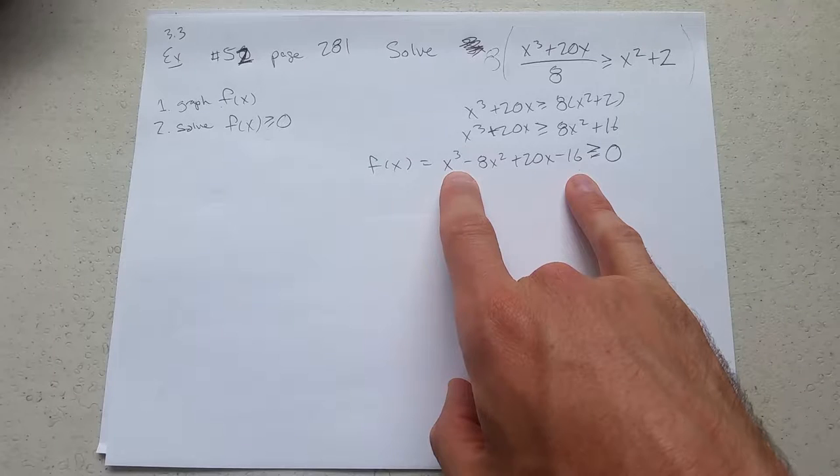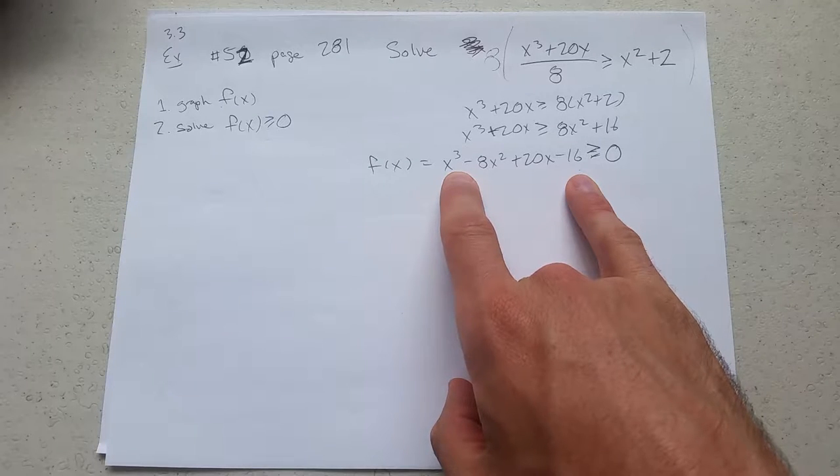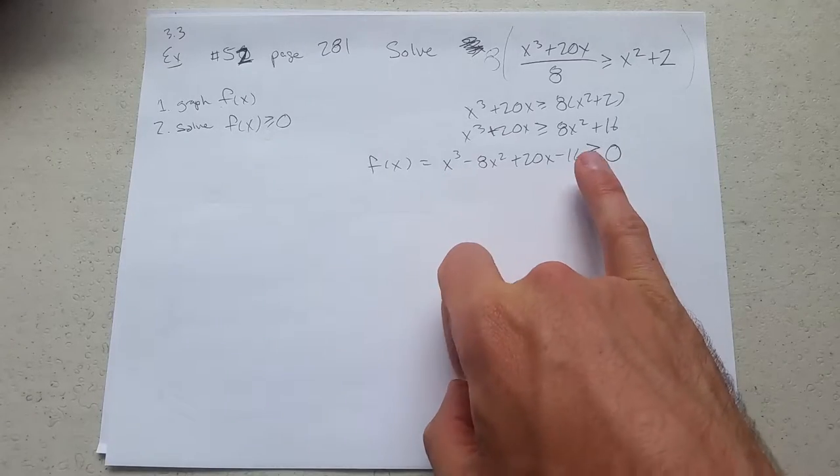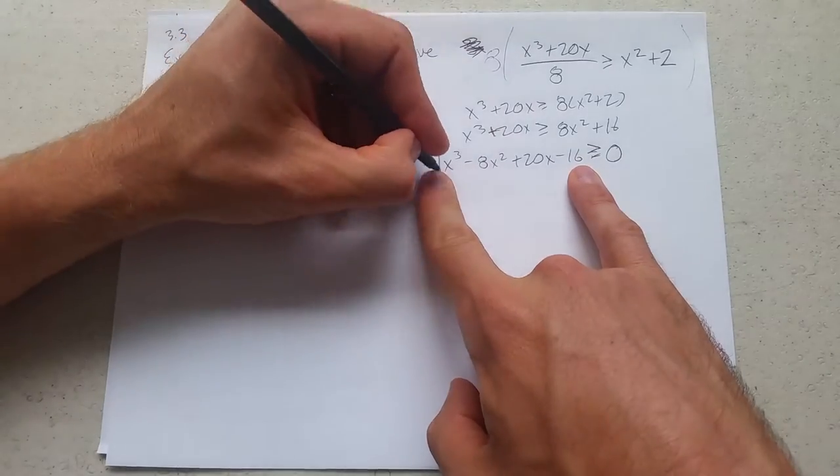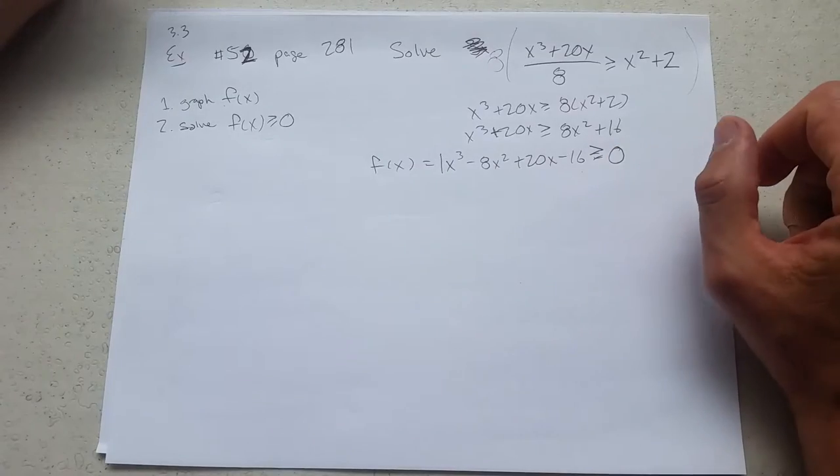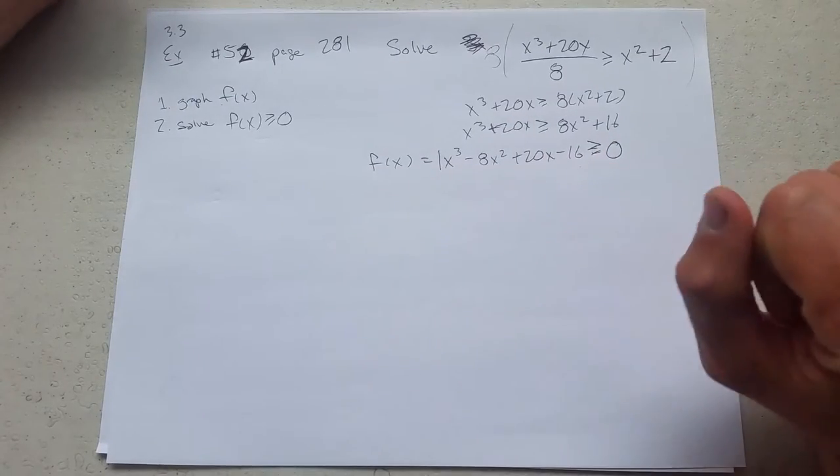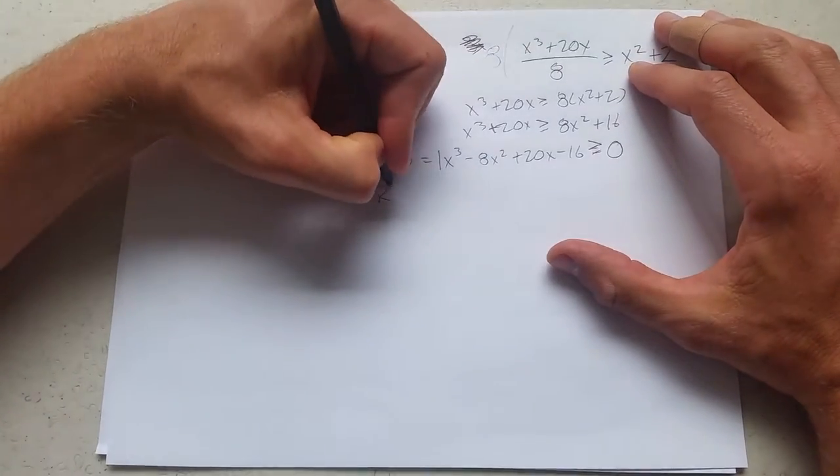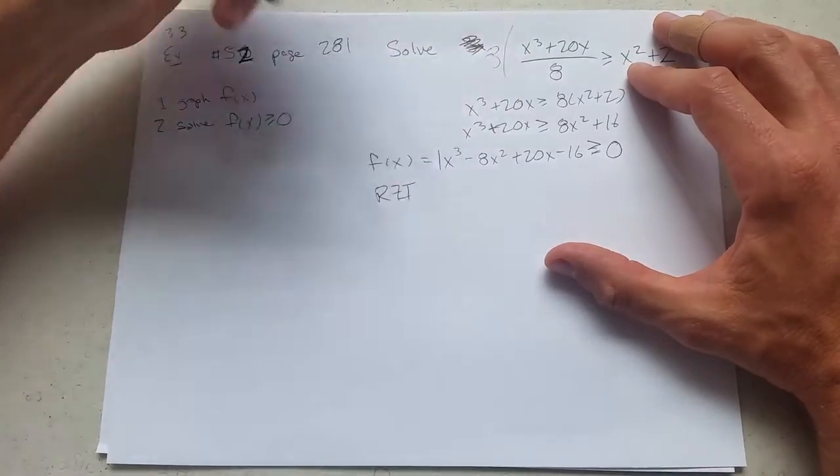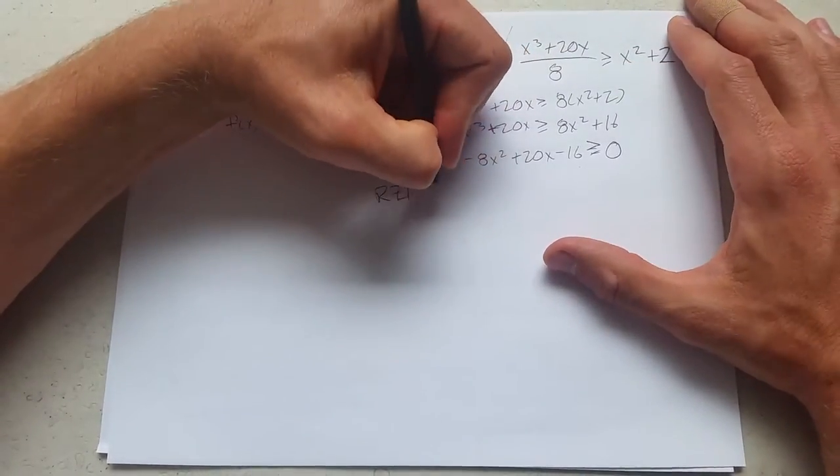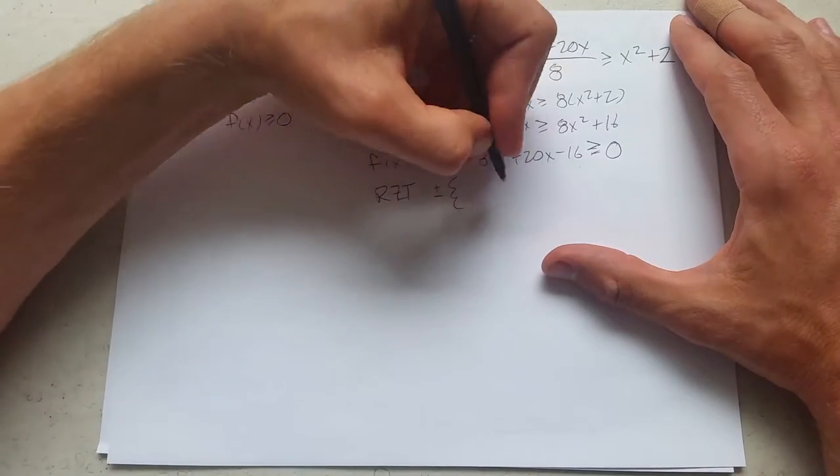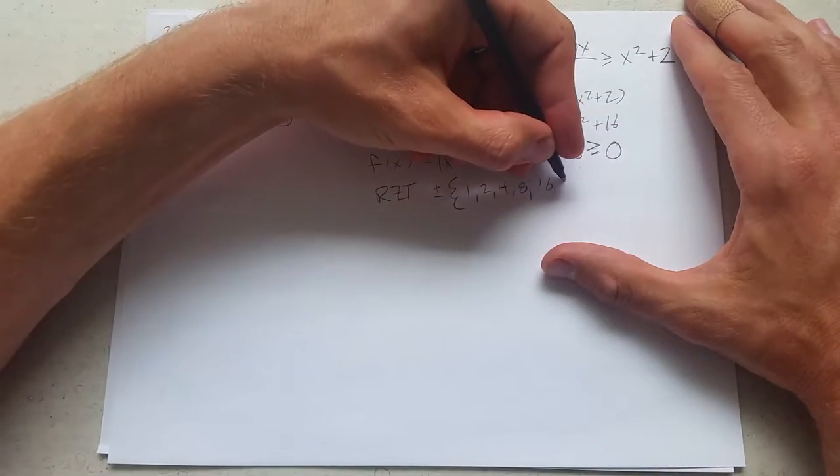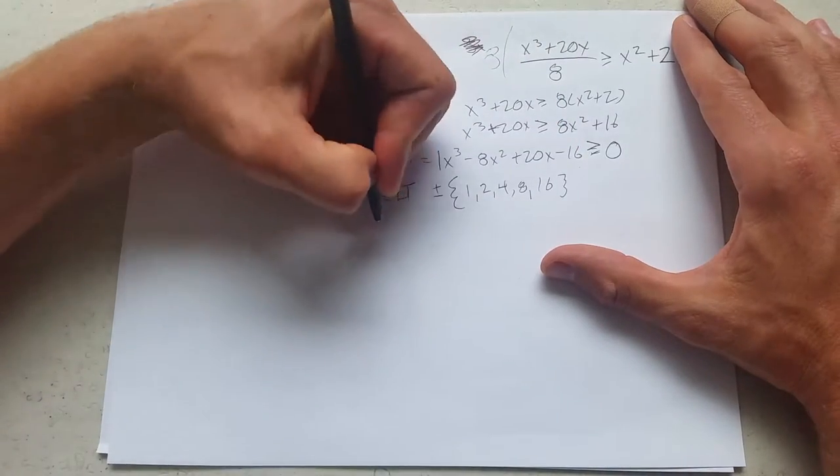So, how do I factor this? Well, we have the rational zero theorem. What are the potential rational zeros? Factors of 16 divided by factors of 1. Good news is there's not many factors of 1, so we're just going to worry about factors of 16. 1, 2, 4, 8, 16. Start with easy. Plus and minus 1.